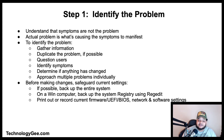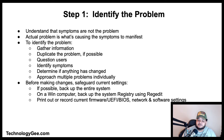The first thing you need to be aware of when troubleshooting a problem is understanding that the symptoms are not the problem — the actual problem is what's causing the symptoms to manifest. To identify the problem you need to gather information, duplicate the problem if possible, question users, identify symptoms, determine if anything has changed, and approach multiple problems individually.